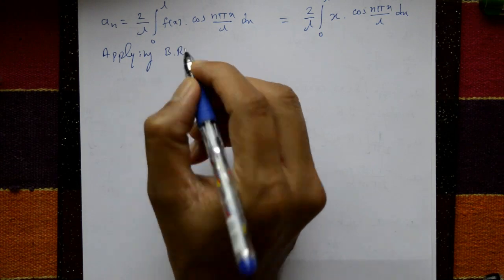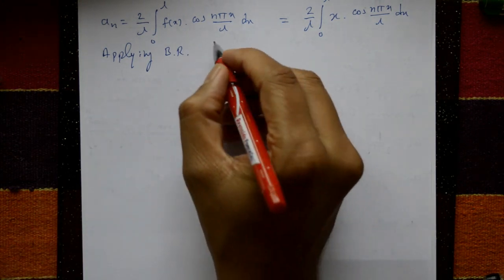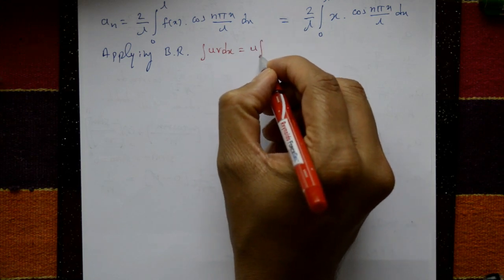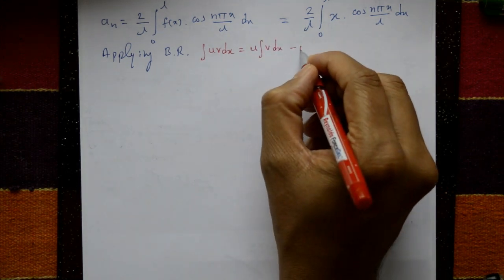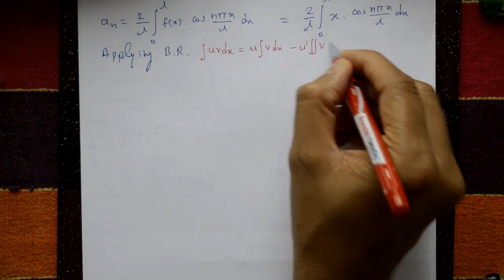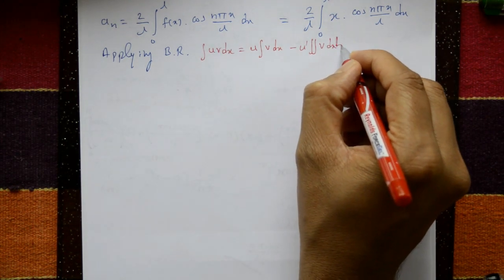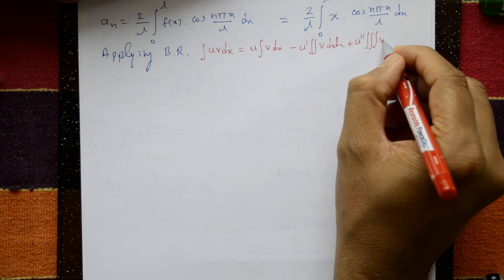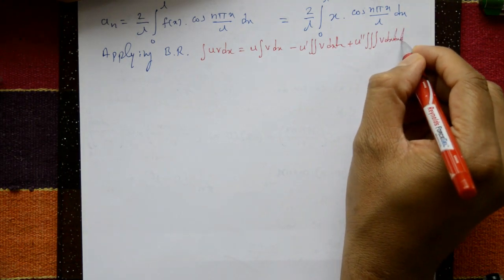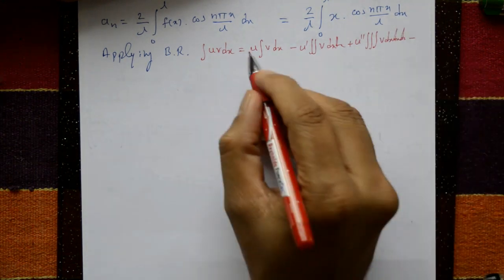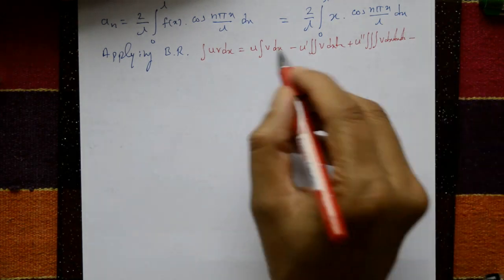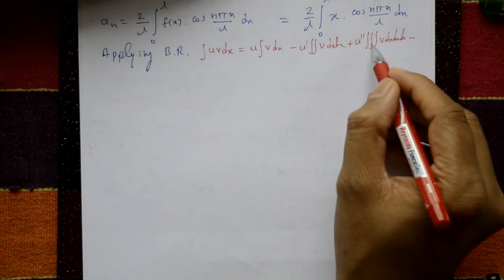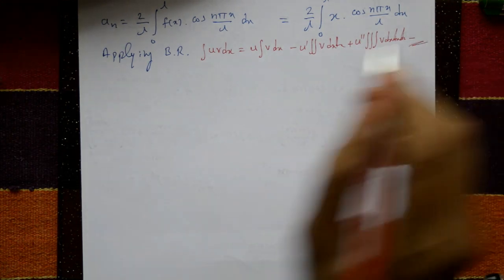Bernoulli's rule states: integral of u·v dx = u·(integral of v dx) minus u'·(integral of integral of v dx) dx plus u''·(triple integral of v dx) and so on, alternating signs: plus, minus, plus, minus.